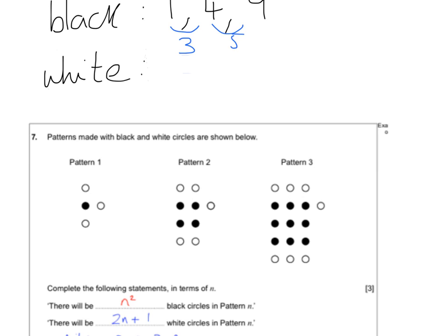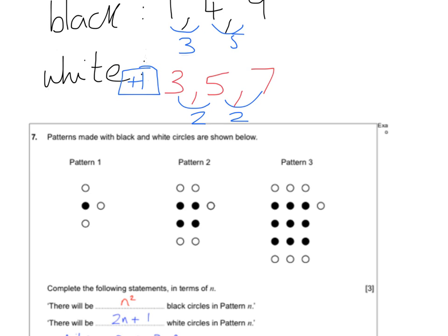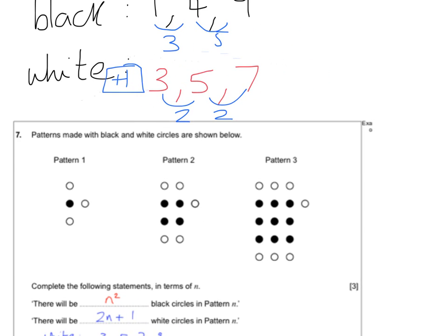For the white squares, it's a good idea to write down how many you have: 3 in the first pattern, 5 in the next, and 7 in the final pattern. That is going up in 2s every single time, so the rule involves 2n. Write out the 2 times table above the sequence — 2, 4, 6 — and ask what do I do to 2 to get to 3, to 4 to get to 5? I'm adding 1 every time. Alternatively, find the term before the sequence starts: it would be 1, and it's positive 1. So the nth term for the white squares is 2n + 1, with the 2 coming from going up in 2s and the +1 from that term in front of the 3.